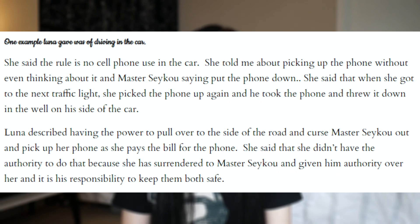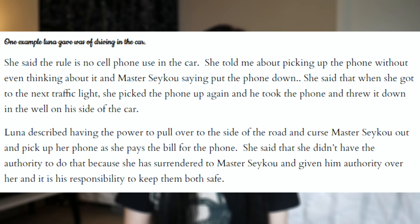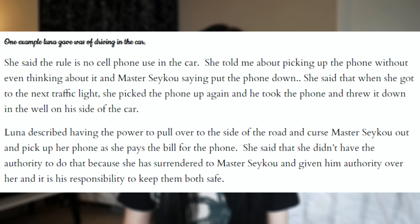Slave Luna gave an example of driving in the car. The rule was no cell phone use. She described picking up the phone without thinking, Master Seku saying to put it down, and then at the next traffic light she picked it up again — so he took it and threw it to his side. Luna described having the power to pull over and curse him out, since she pays the phone bill, but said she didn't have the authority to do that because she had surrendered authority to him.